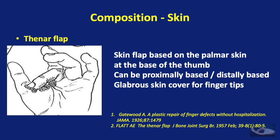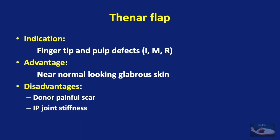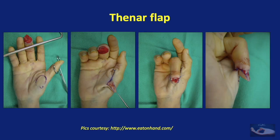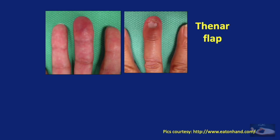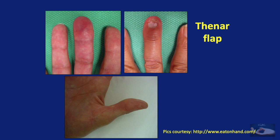The commonest type of intrinsic flap in the hand is a skin flap. The thenar flap is a good example, based on palmar skin at the base of the thumb. It can be proximally or distally based and brings good glabrous skin cover for fingertips. Disadvantages include a potentially painful donor scar on the palm and interphalangeal joint stiffness if therapy is not started early, due to acute flexion at the proximal interphalangeal joint. However, the aesthetic results of this reconstruction are excellent.